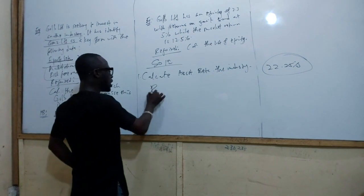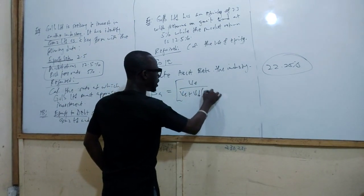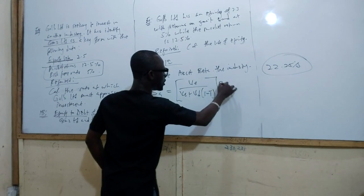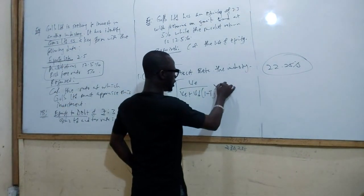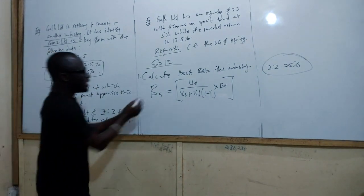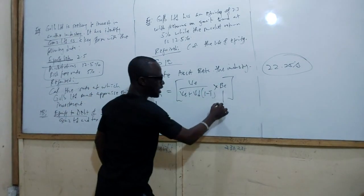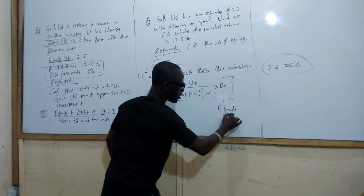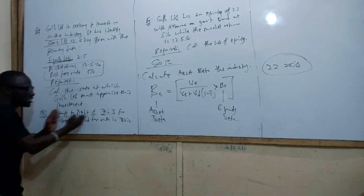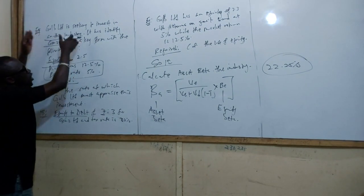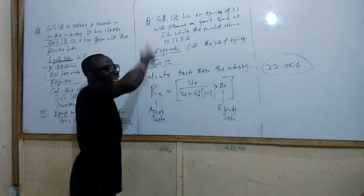The formula is: BA equals [VE divided by (VE plus VD times (1 minus T))] times BE. BA is the asset beta, BE is the equity beta. We use the information about the proxy company — their equity beta, their debt-to-equity ratio, and their tax rate — to calculate the asset beta for the industry.